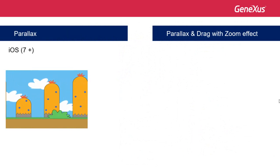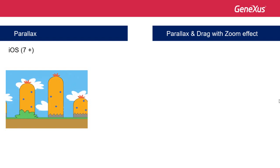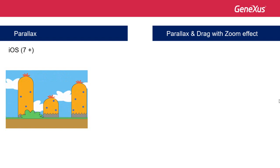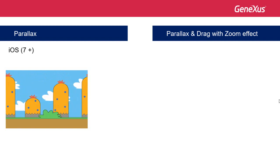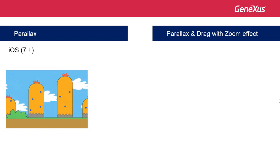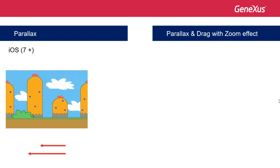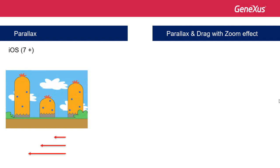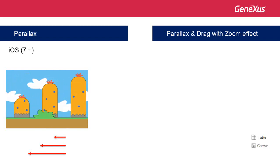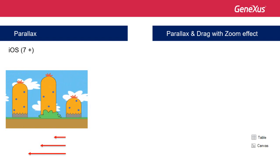Parallax is a visual effect commonly used in applications for smart devices and web pages. It implies sliding one object over another object that is behind it at a different speed, thus causing a sense of depth. In this example, we see a parallax effect with three layers moving at different speeds, where the inner layer is the one with the slower speed. In GeneXus, we may have the parallax effect for a table or canvas and its content, in relation to the container or to other controls specified in the scroll attachment property.